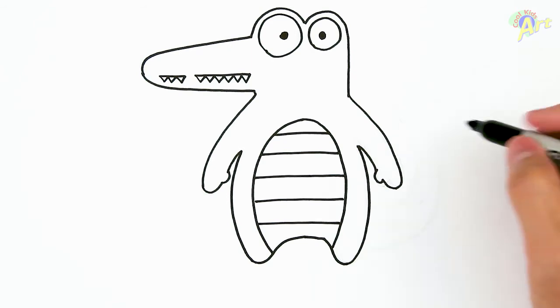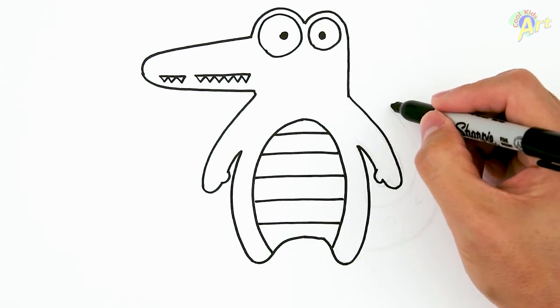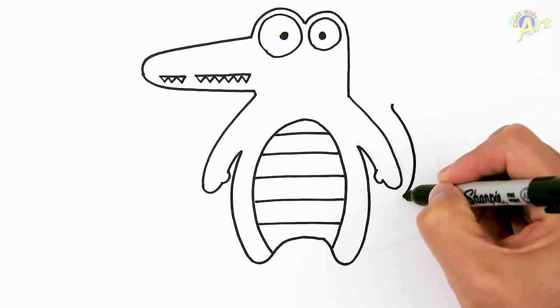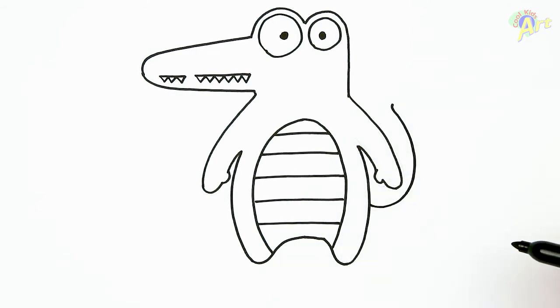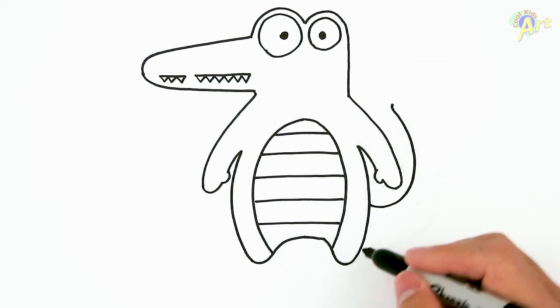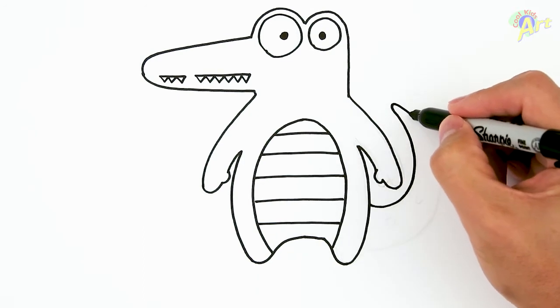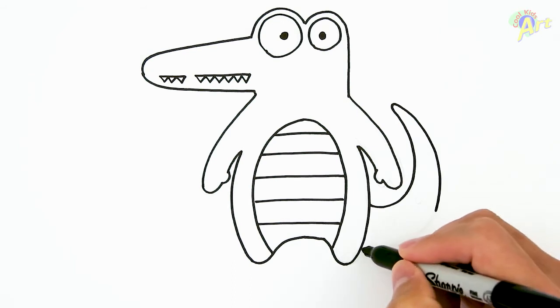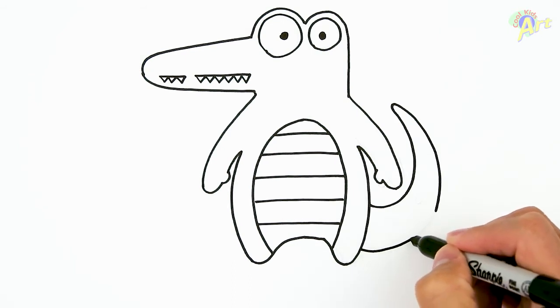And then now we're going to draw the tail. So we're going to start from here and then we're just going to curve it all the way around. It's connected to his body. And then from here, start off smaller here and get bigger and bigger. Connect all the way back to the bottom.